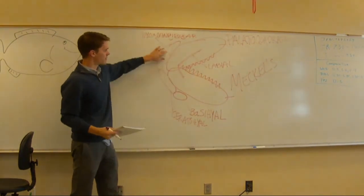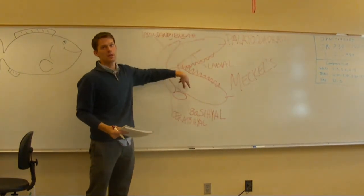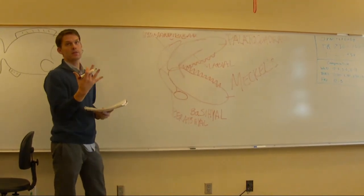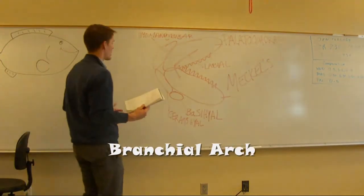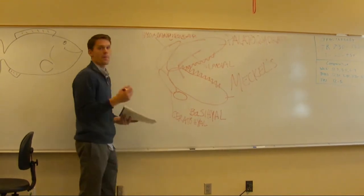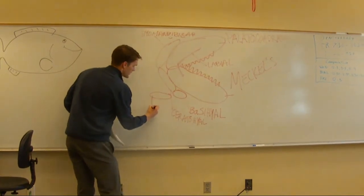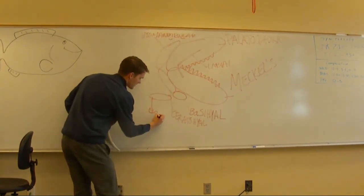So that's your hyoid arch, three pieces to that, three pieces to the mandibular arch, and then you have five pieces to the branchial arch, and all these end in branchial. So again, at the bottom, you have your basey branchial.